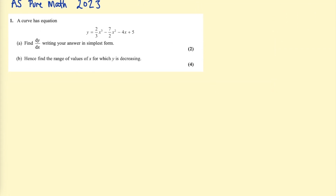On to the final question in this video — an exam question from the 2023 papers, as an example of what you might have to do in an exam. The question says: a curve has equation y = (2/3)x³ − (7/2)x² − 4x + 5. Part a: find dy/dx, writing your answer in simplest form. Part b: hence find the range of values of x for which y is decreasing. They've scaffolded this for us — the first step is to find dy/dx, which is the same as finding f'(x).